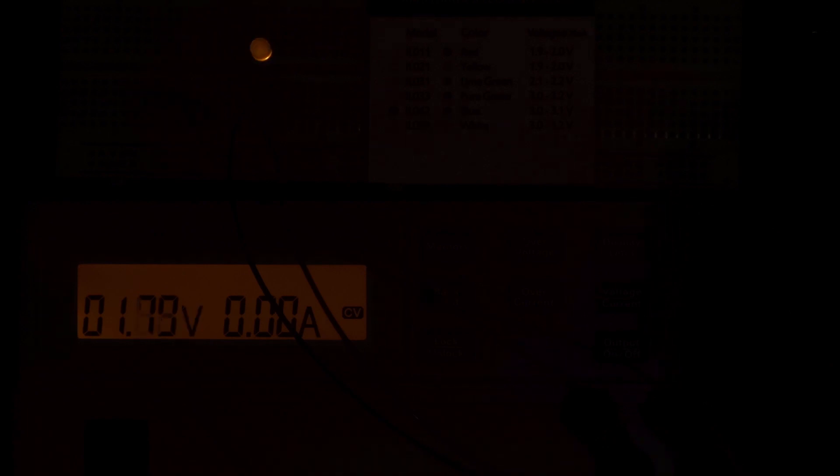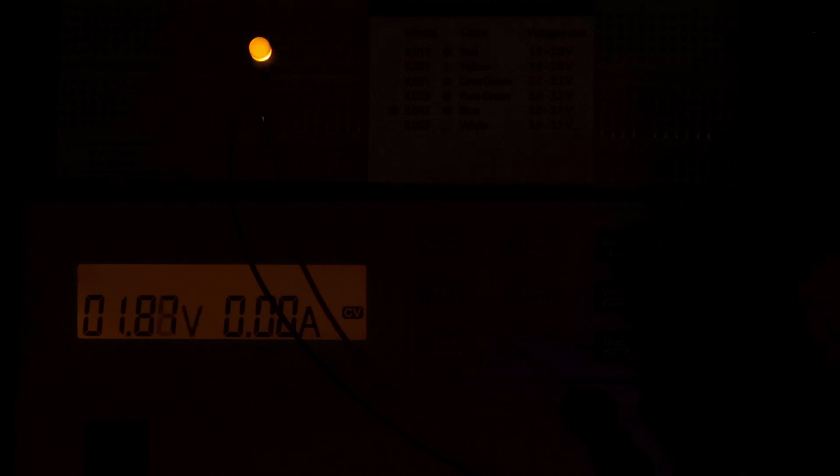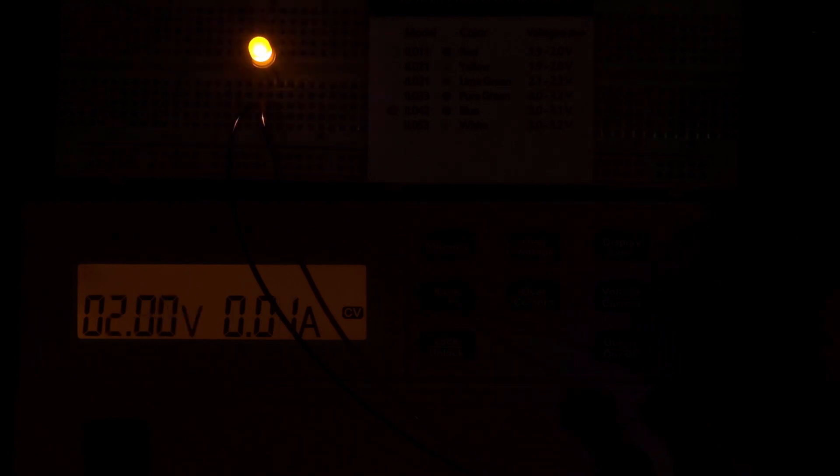So just a hundredth of a volt is changing the brightness of the LED, which is very interesting. So within that range there, and even within the 1.9 to 2 volt range, which is the normal operating range of this LED according to the manufacturer, you see an interesting effect there, where just a hundredth of a volt is making a big difference.